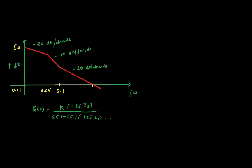If the transfer function is in this form with tau1, tau2, and tau3, then the first breakaway point is 1/tau1, the second breakaway point is 1/tau2, and the third is 1/tau3.